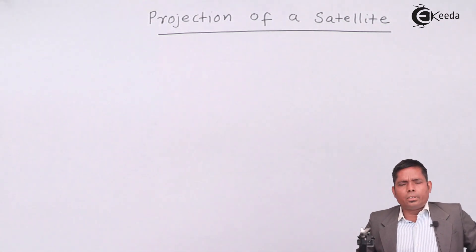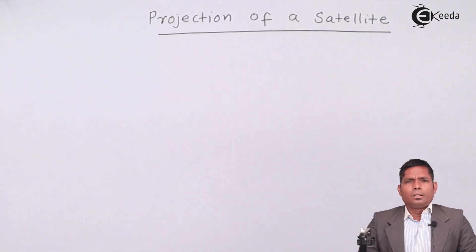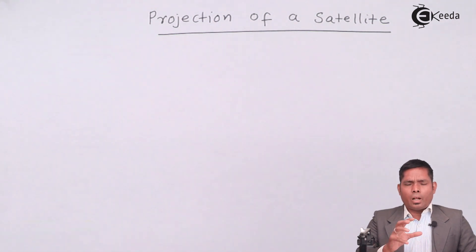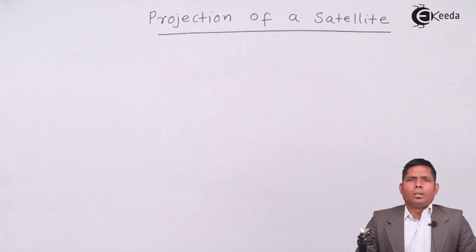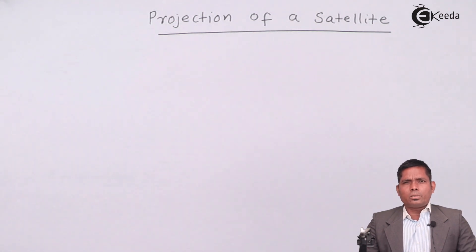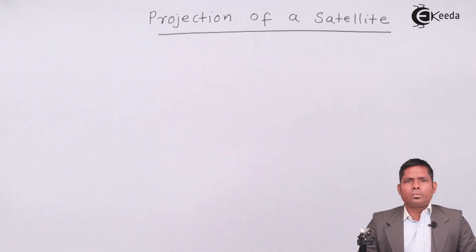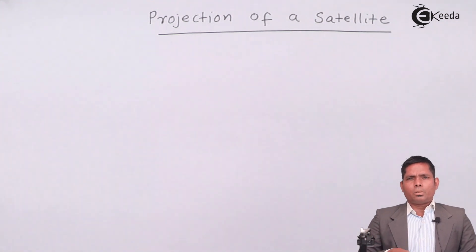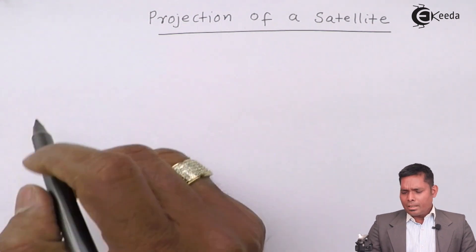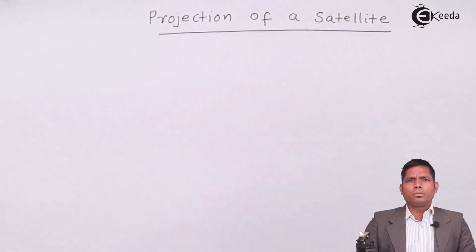The definition of a satellite is that any object which moves around any other object under the influence of that object is known as a satellite. For example, an electron revolving around the nucleus with the influence of the nucleus is the satellite of the nucleus. Similarly, the moon is the satellite of Earth because it revolves under Earth's influence.